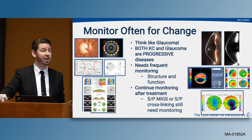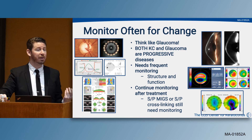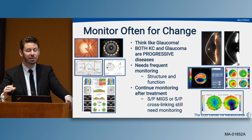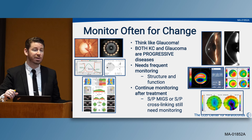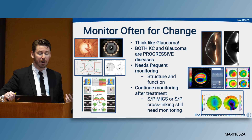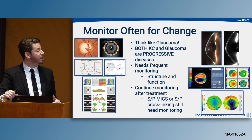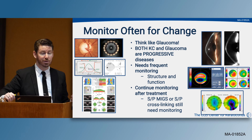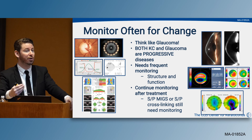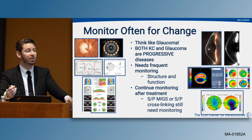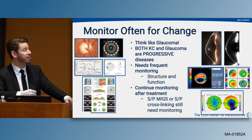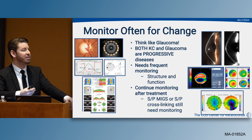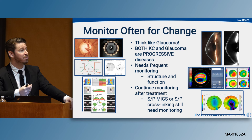We also want to monitor often for changes. Think of the disease more like glaucoma than a purely refractive disease — both are progressive diseases requiring frequent monitoring of structure and function. In glaucoma we look at the optic nerve, OCT, and visual fields. For keratoconus, we look at curvatures, elevations, and thickness, as well as aberrations over time. It's important to continue monitoring after treatment — just because an individual has had corneal collagen cross-linking doesn't mean we shouldn't follow them.